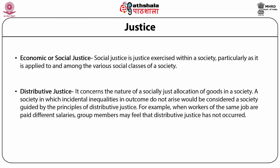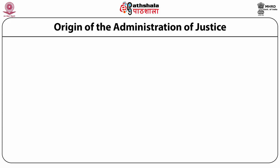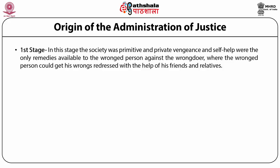Distributive justice is economic in nature, unlike civil and criminal which are legal in nature. Looking at the origins of the administration of justice, we can divide it into four stages. In the first stage, which was a primitive society, private vengeance and self-help were the only remedies available to the wronged person — they could get their wrong addressed with the help of friends and relatives. You see this every day in India — this is what we call vigilante justice. You see people accused of rape or molestation sometimes being beaten up, and parents taking it upon themselves to assault alleged molesters or rapists.